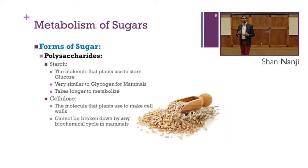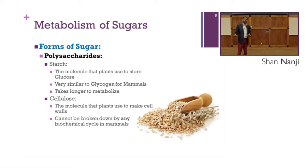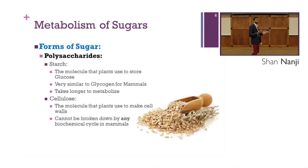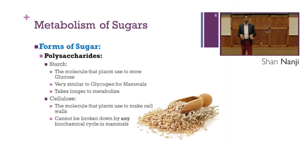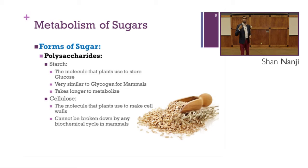Then we have cellulose. Cellulose is the molecule that plants use to make cell walls, and it cannot be broken down by any biochemical cycle in the body. Since cellulose cannot be broken down, it passes through the GI tract and scrubs it on its way through. Cellulose is the scientific name for fiber.